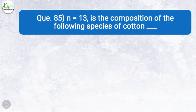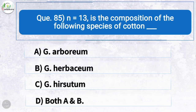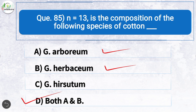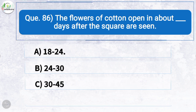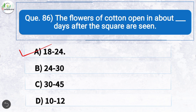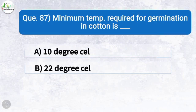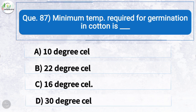Question eighty-five: n = 13 is the composition of which species of cotton? The correct answer is option D: both Gossypium arboreum and Gossypium herbaceum. Question eighty-six: The flowers of cotton open in about how many days after the squares are seen? The correct answer is option A: 18 to 24 days. Question eighty-seven: Minimum temperature required for germination in cotton is — the correct answer is option C: 16 degrees Celsius.